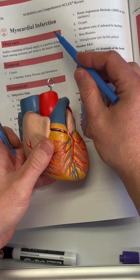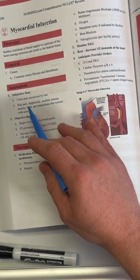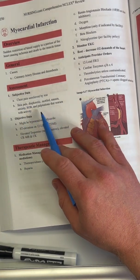With myocardial infarction, you're going to see things like chest pain which is unrelieved by rest and it might radiate out, especially into the arms. You're going to see pale skin, diaphoresis, and palpitations with activity.